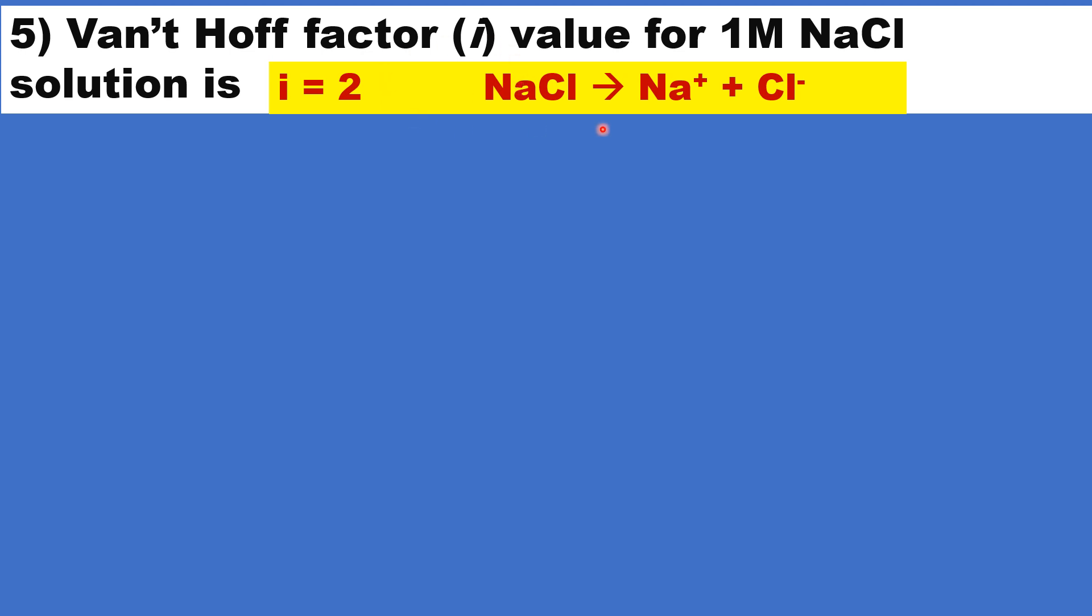For example, calcium chloride, if it is completely dissociated, then Ca2+ ion plus 2Cl-. Therefore, i equal to 3, if it is completely dissociated.